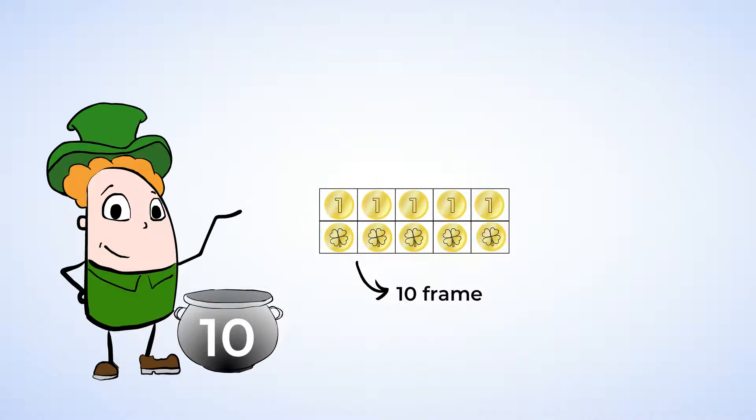Now since this ten frame has ten spaces in it, you can see that there are ten gold coins. You don't even need to count, because you can see that the ten frames are all filled up. How cool. So we know that five plus five makes our magic ten. Now let's write that down.